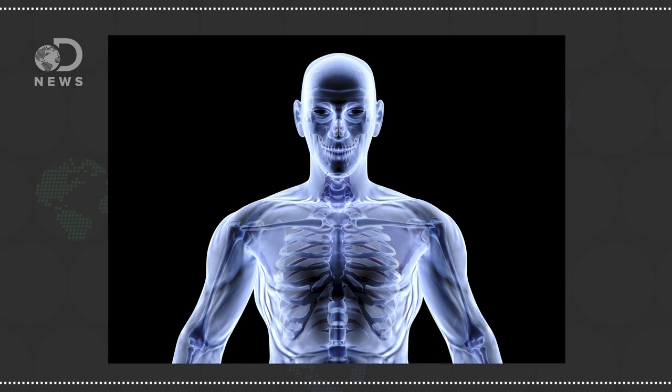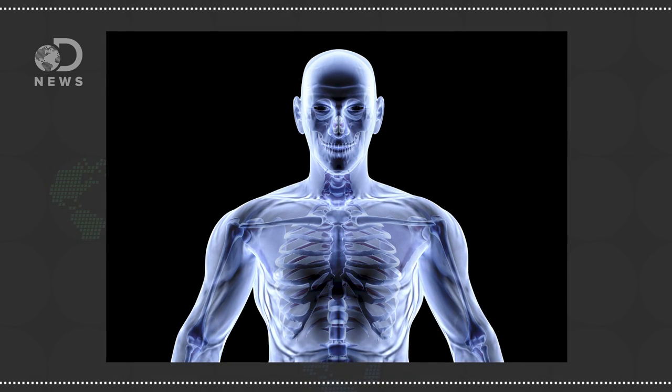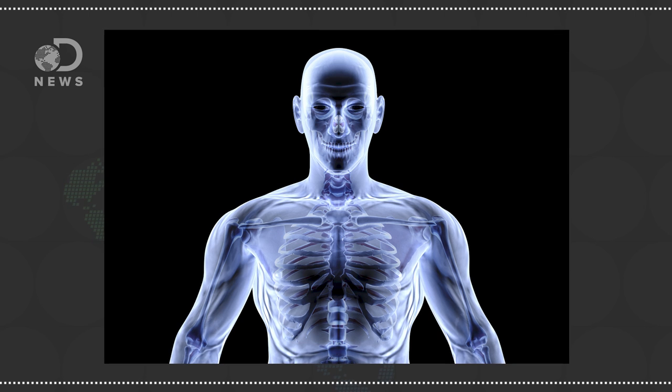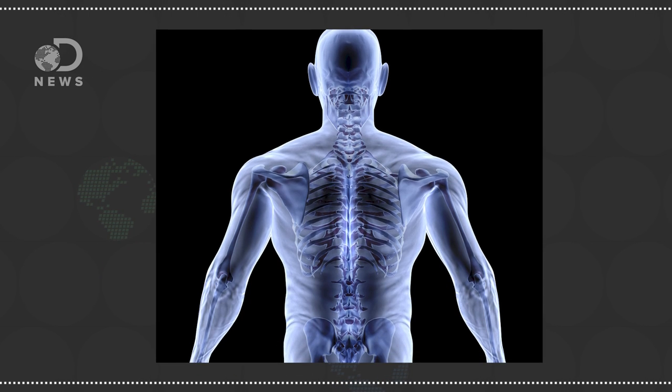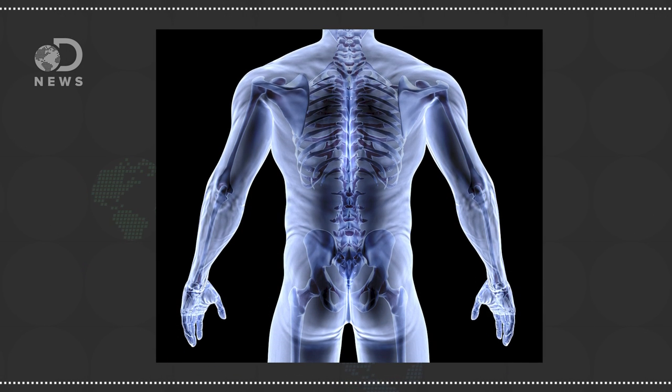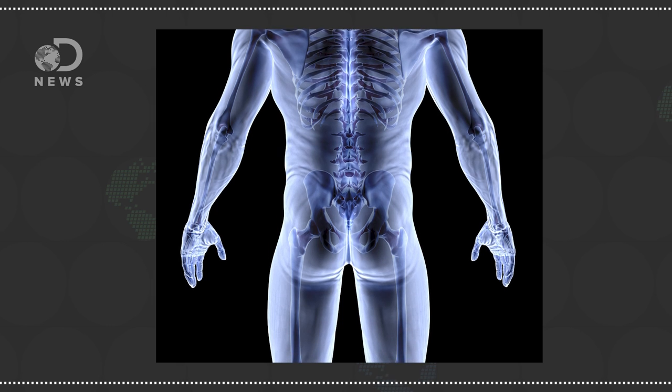ALS affects everyone differently. For example, there are two neuronal groups, the upper and lower motor neurons. If ALS degrades the upper motor neurons located in the brain, muscles will tighten and resist movement. If it hits the lower motor neurons in the spinal cord, the person will feel weak, get twitches, and their muscles will waste away.